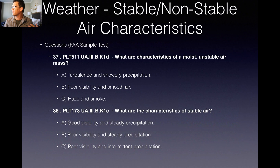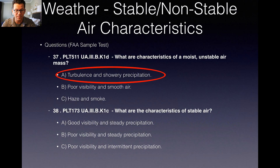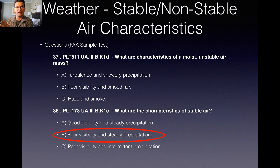A little bit counterintuitive here — you think of stable air as being nice weather. But let's go to question 37: what are characteristics of a moist, unstable air mass? You've got turbulence and showery precipitation, poor visibility and smooth air, or haze and smoke. The answer is turbulence and showery precipitation. And for characteristics of stable air: good visibility and steady precipitation, poor visibility and steady precipitation, or poor visibility and intermittent precipitation. Stable air has poor visibility and steady precipitation. Unstable air has good visibility and intermittent or showery precipitation.